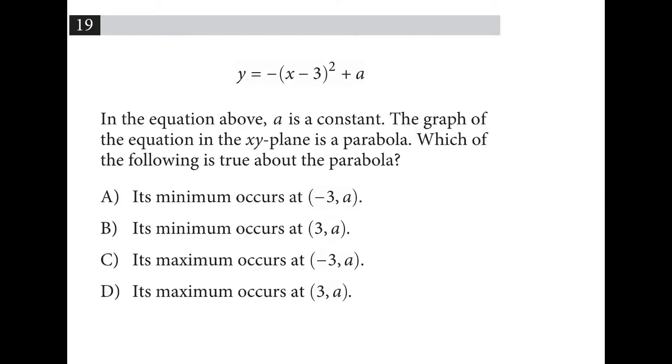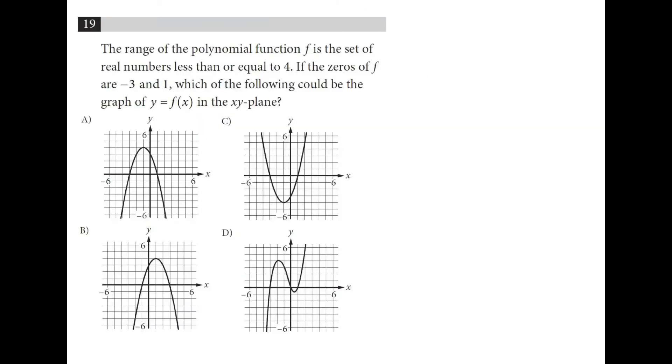This equation is in vertex form. The negative tells us it opens downward. The x-coordinate of the vertex is 3. The y-coordinate of the vertex is a. Because it opens down, that vertex is going to be the maximum point. The range is the set of real numbers less than or equal to 4. So that rules out these two. And these are the only ones that the maximum is at a y value of 4.